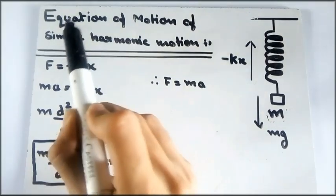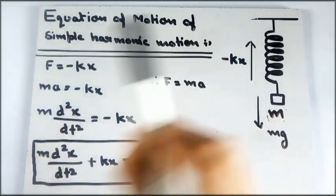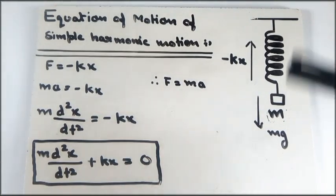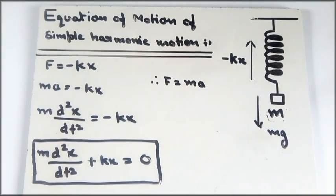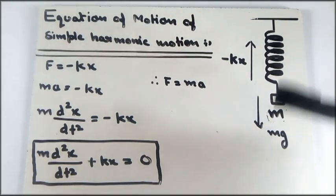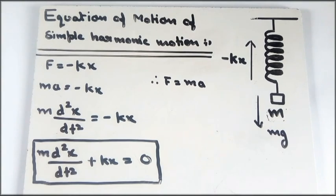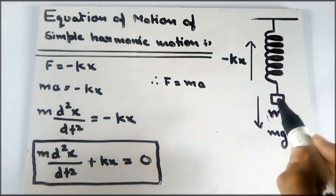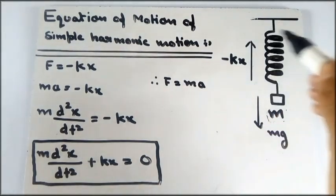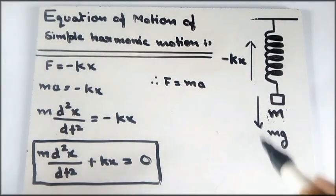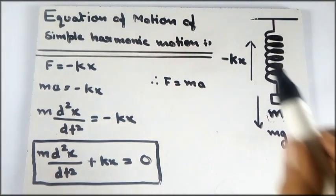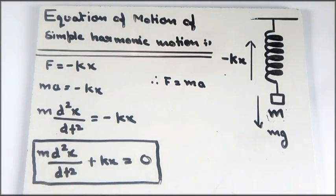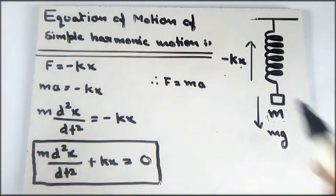This video is about deriving the equation of motion of simple harmonic motion. We will derive it from a spring-mass system because the motion of a spring-mass system is simple harmonic. Here, mass m is hanging from the spring, and the spring balances the gravitational force mg with a restoring force -kx, where k is the spring constant and x is the displacement caused by that mass.